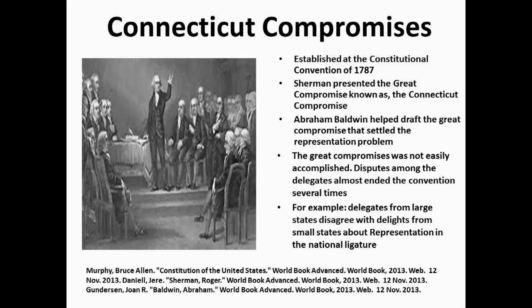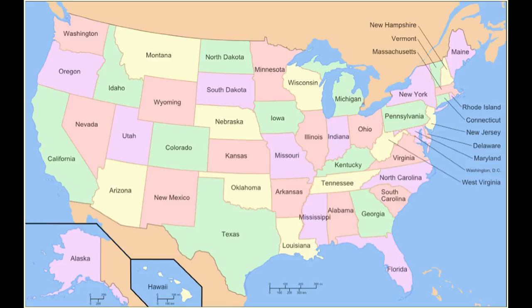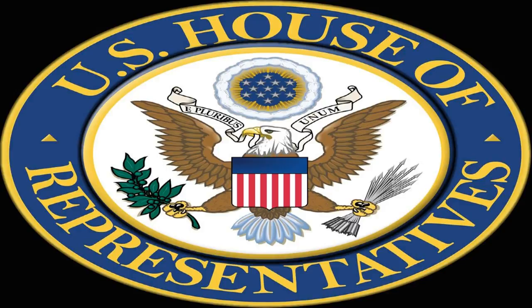The Connecticut Compromise of 1787 laid the groundwork for Congressional representation. Each state is allowed two Senators, to maintain equal representation for every state regardless of its size. Each state is also guaranteed at least one Representative.